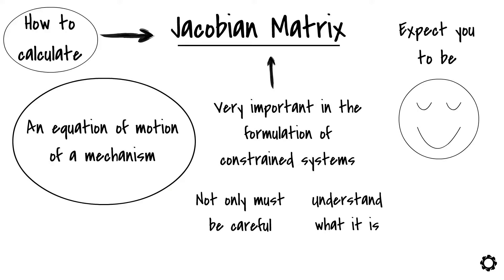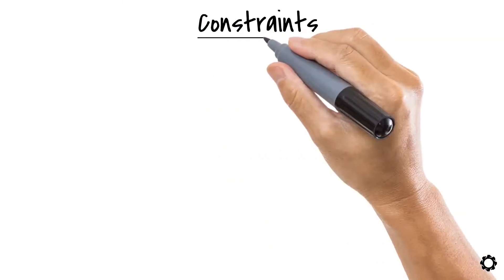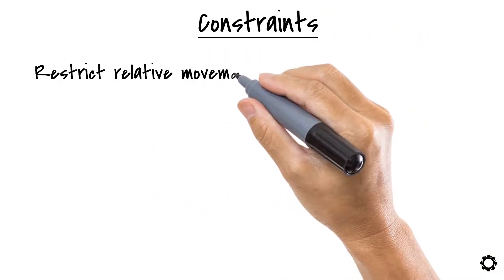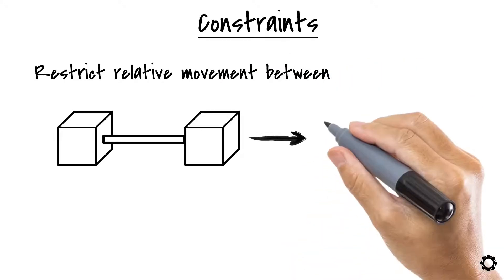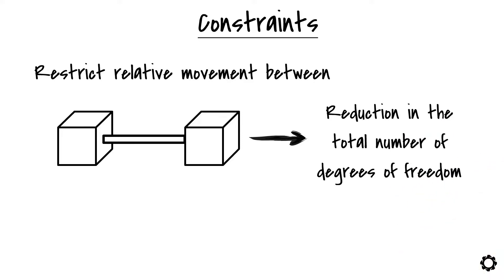When we started talking about constraints, it was clearly understood that constraints restrict relative movement between connected bodies in a mechanical system. This causes a reduction in the total number of degrees of freedom of the system.